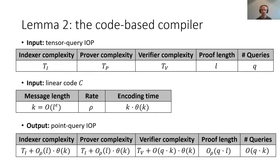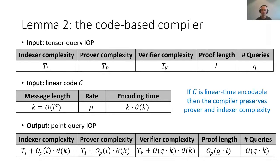If you look at the parameters for the input and output of the point query IOP that we produce, they're very closely related. The output point query IOP has indexer, prover, and verifier complexity which depend on the complexity of the prover, indexer, and verifier from the input IOP, plus some additional overheads related to the encoding time of the error correcting code. In particular, if we use a linear time encodable code C, then our code-based compiler actually preserves the complexity of the prover and the indexer. So if we use a linear time tensor query IOP as input, then the output is a linear time point query IOP.